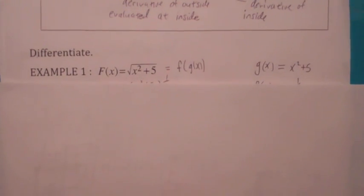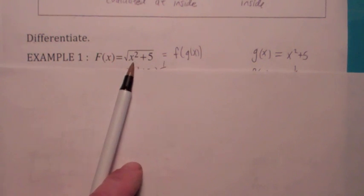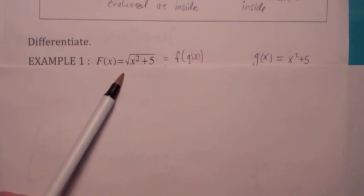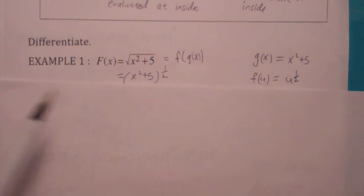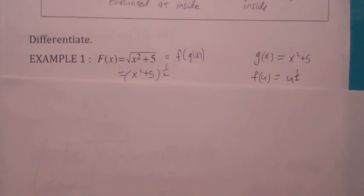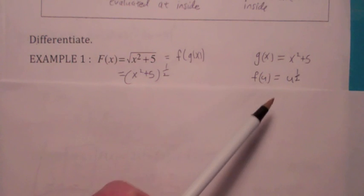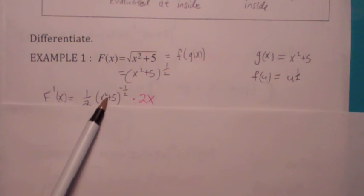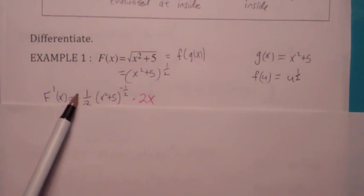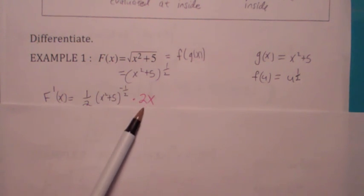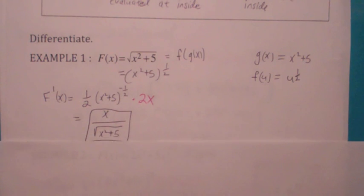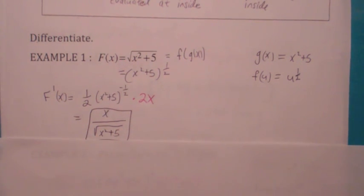Let's look at a simple example. To differentiate this composition of two functions, if you think of this as f of g of x, the inside function is x squared plus five, and the outside function would be the square root function, or f of u equals u to the one-half. The chain rule says you start by taking the derivative of the outside function — it becomes one-half — but you keep g of x fixed, so it's one-half times g of x to the negative one-half. This is your f prime of g of x. Then you multiply by the derivative of g, giving f prime of g of x times g prime of x. You can simplify by canceling the twos and bringing down the negative exponent, calling it a square root.